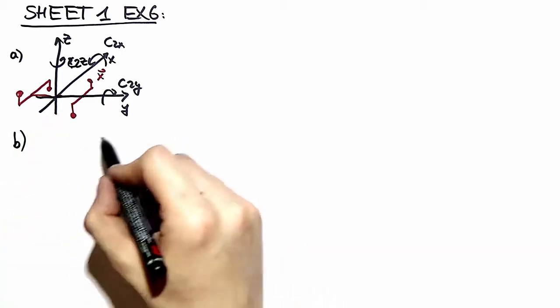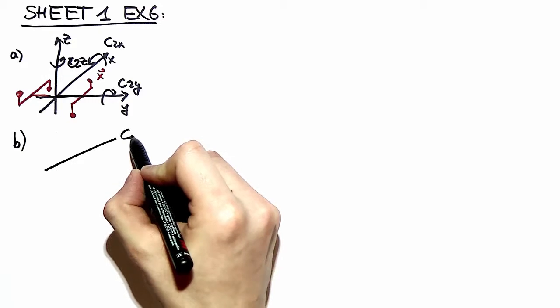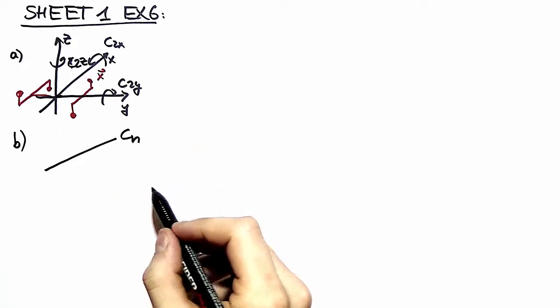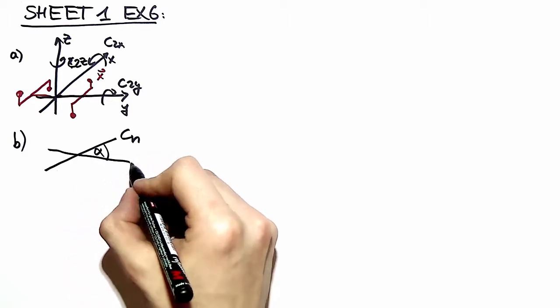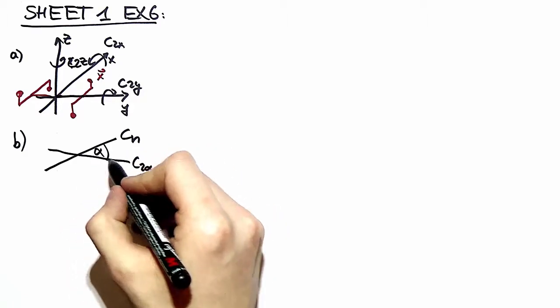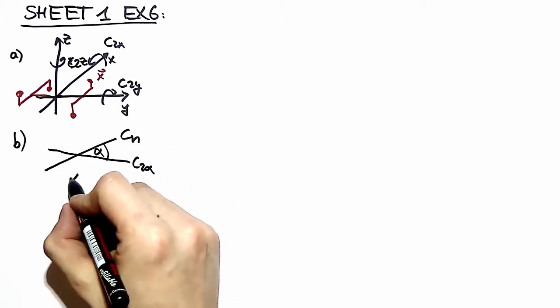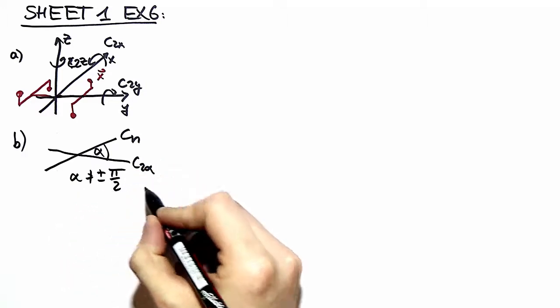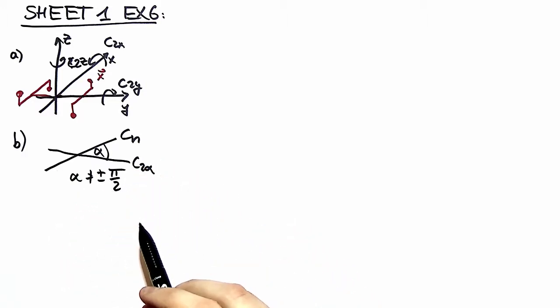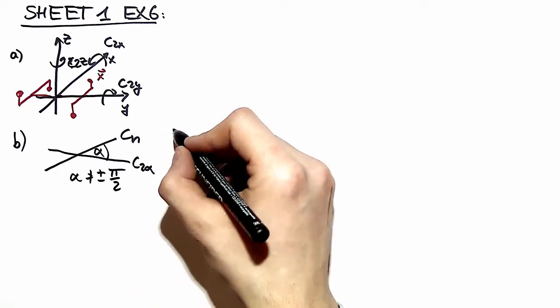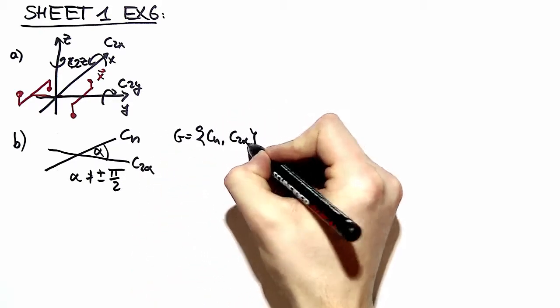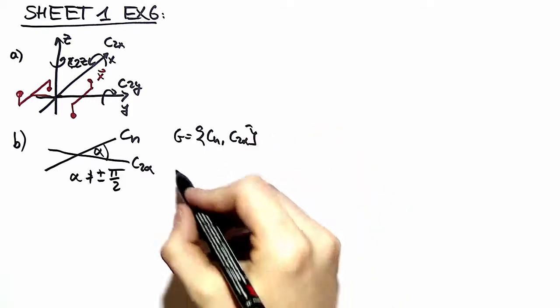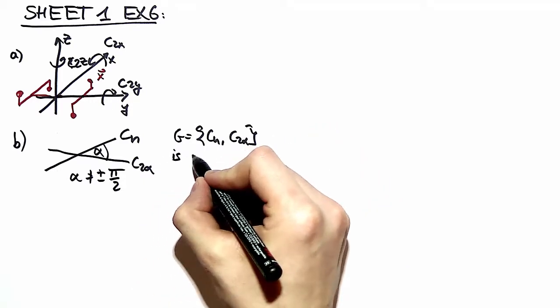In part B we take an n-fold rotational principal axis with the two-fold rotational axis inclined by an angle alpha to it where alpha is not equal to plus minus pi half, meaning it's not perpendicular to Cn. So we take now Cn and C2 alpha as a set of symmetry operations and we have to show that this is not a group.